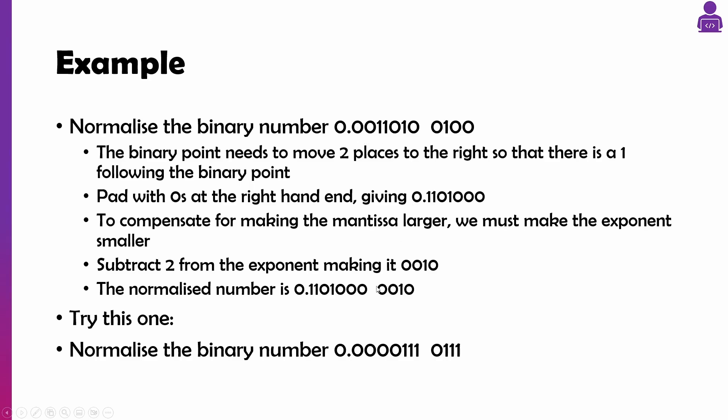so we've moved two, so we take two from the exponent, making it two. So now our number is 0.110100 with an exponent of two.